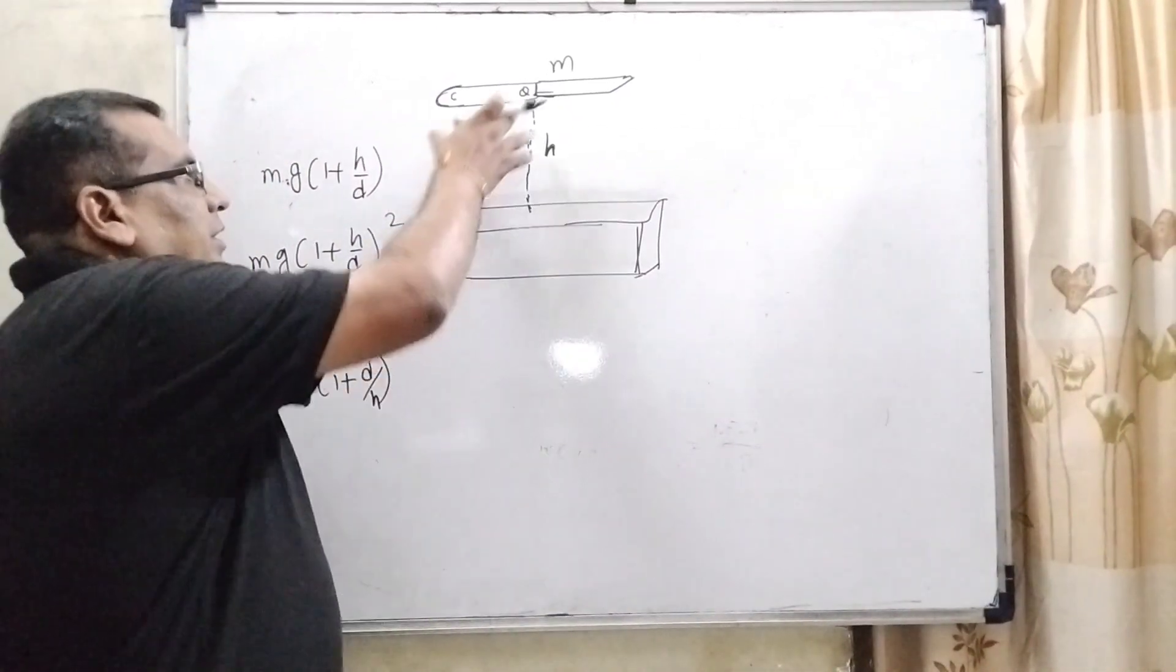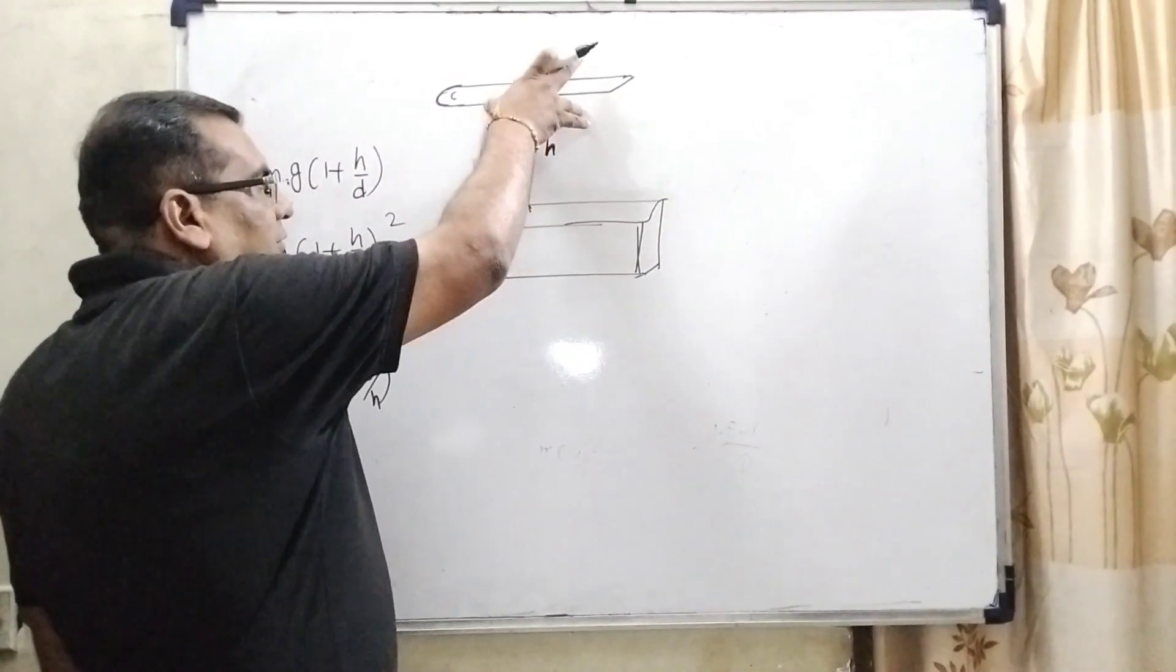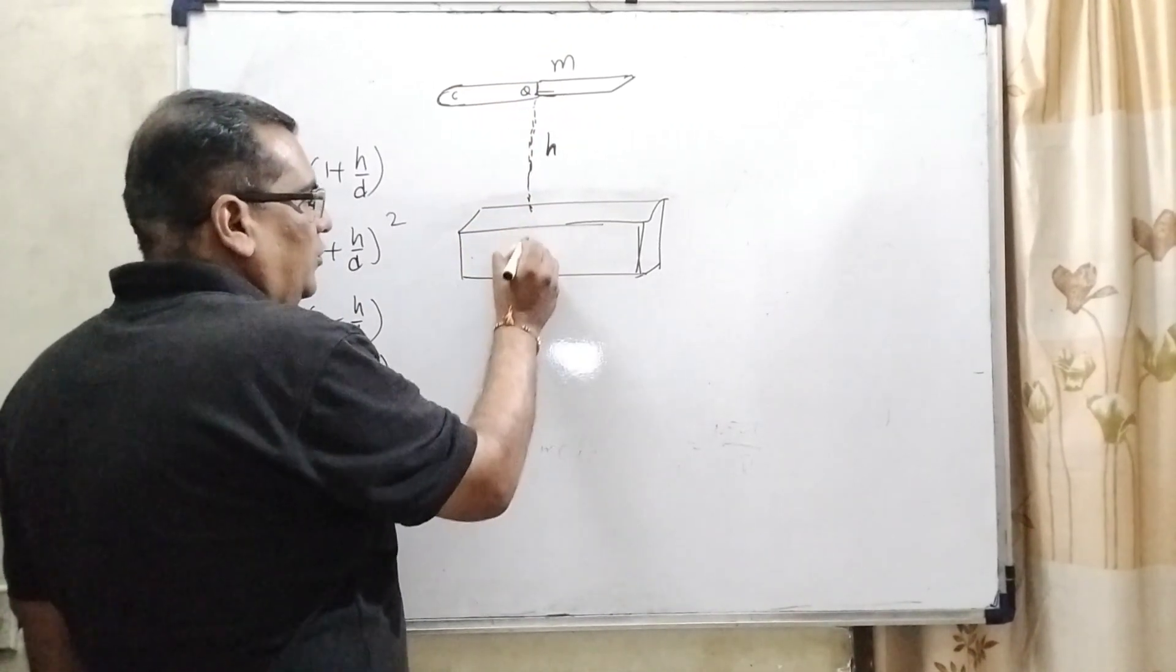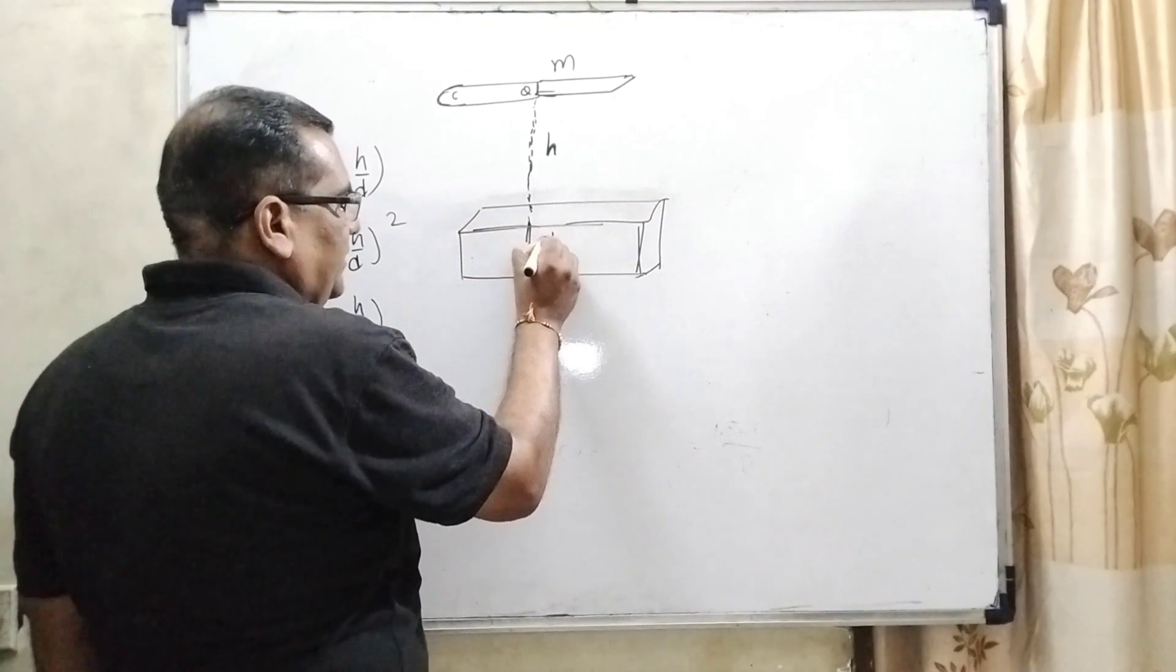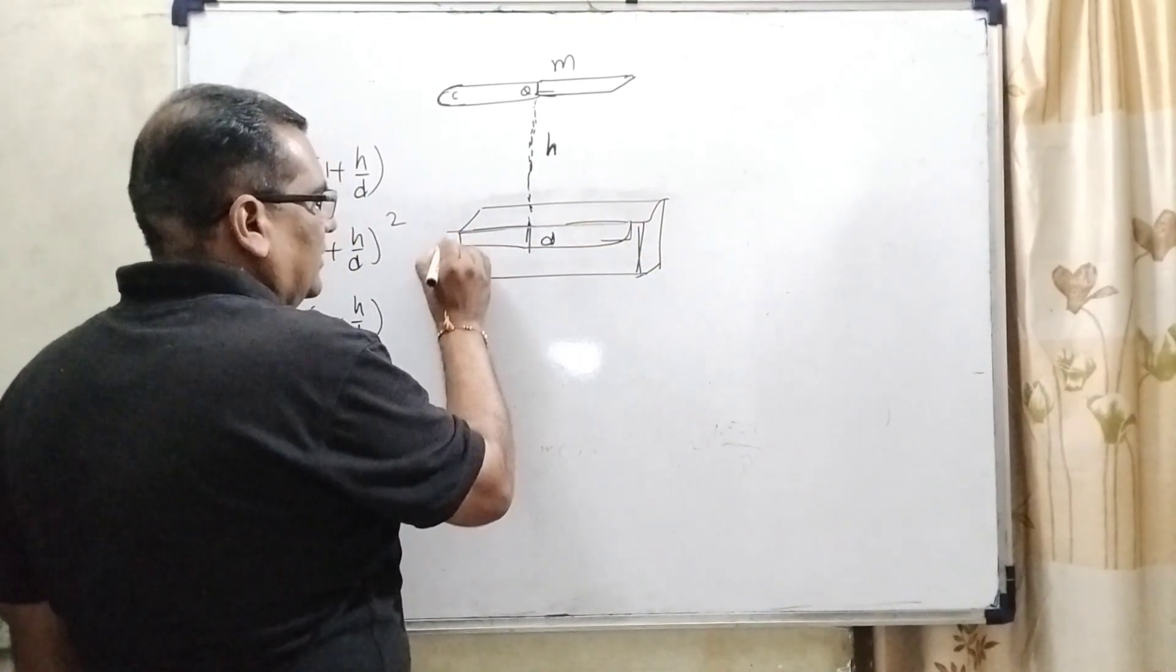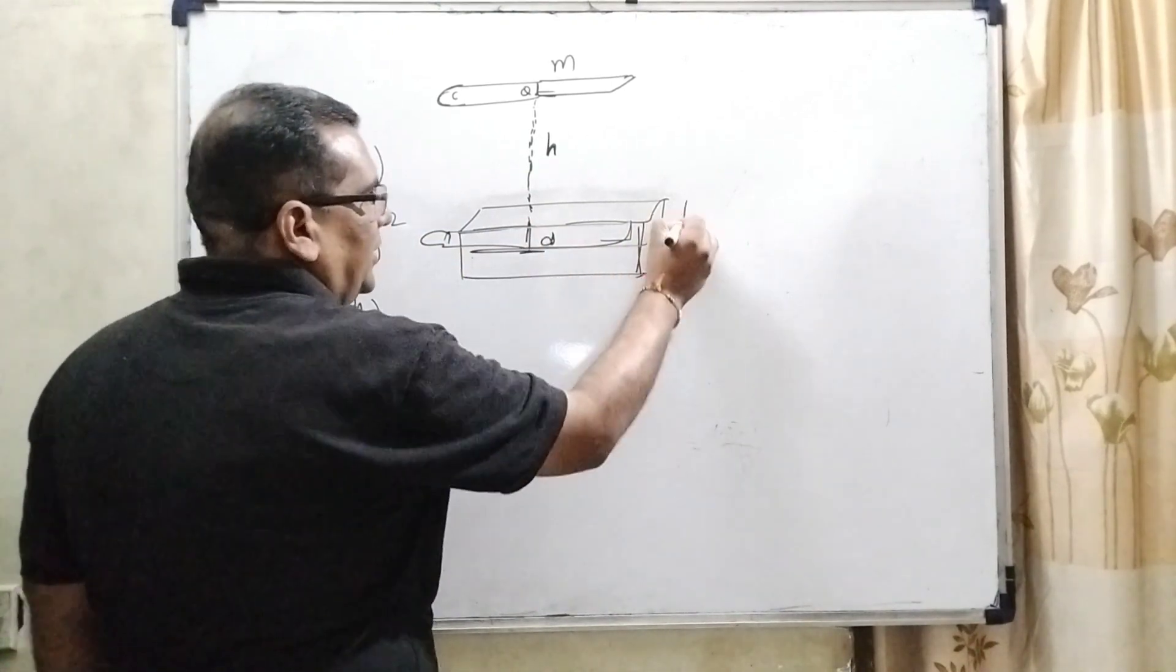In this question, we have given a knife which is opened and when it is fallen from the height H and then stuck in this wood, the depth is D. So here this knife is stuck in the wood at the depth D.